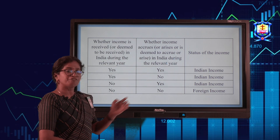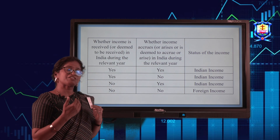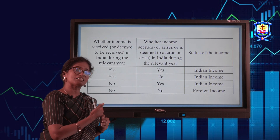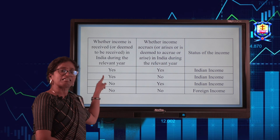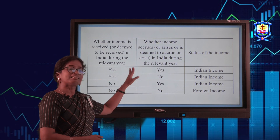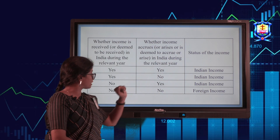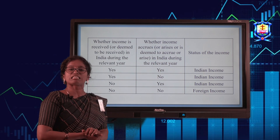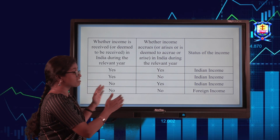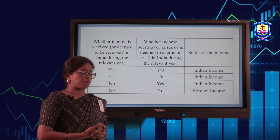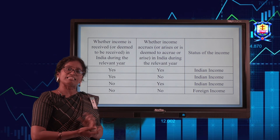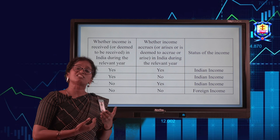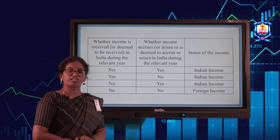In order to understand the relationship between residential status and tax liability, you need to understand the meaning of Indian income and foreign income. If you are receiving income in India, or the source is from India, or the source is from India but receipt is outside India — in all these cases the income is considered Indian income. The income is a foreign income only if it is not received in India and does not accrue in India.